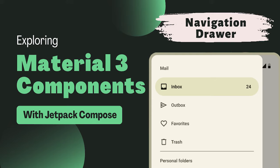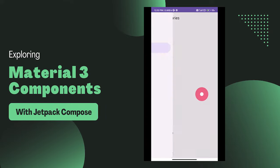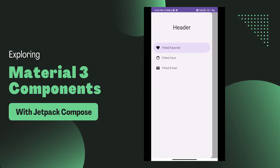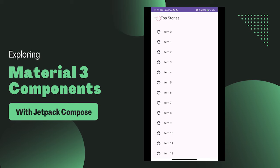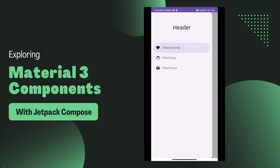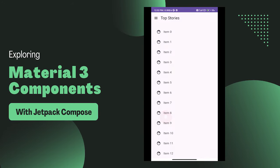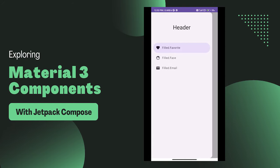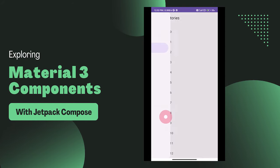Hello coders, welcome back to our series on Material Design 3 with Jetpack Compose. Today we are diving into an essential part of many Android apps: the navigation drawer. The navigation drawer is a slide-out menu that allows users to navigate between different sections of an application. It is typically used in conjunction with a top app bar and, when not in use, is hidden off screen, providing a clutter-free interface.